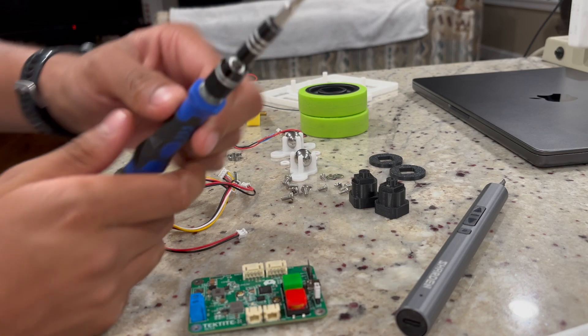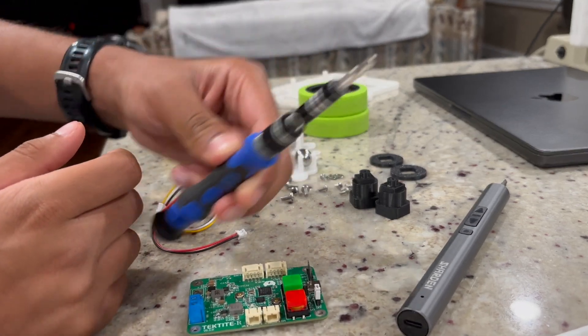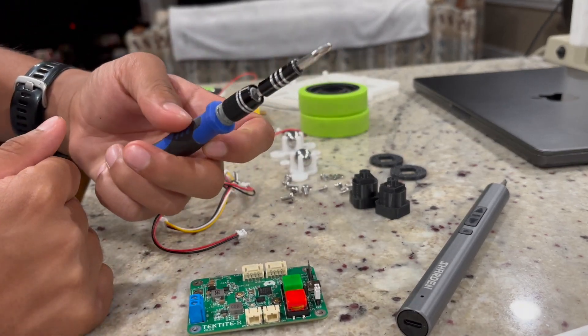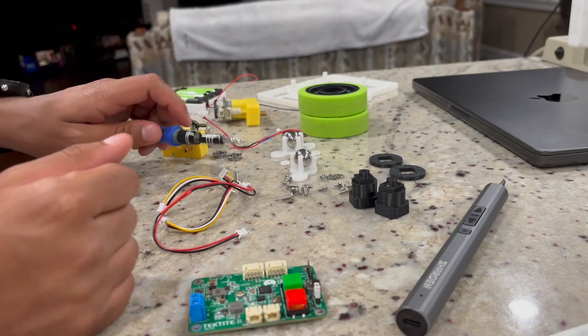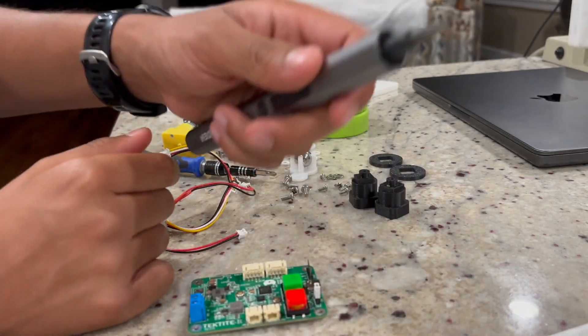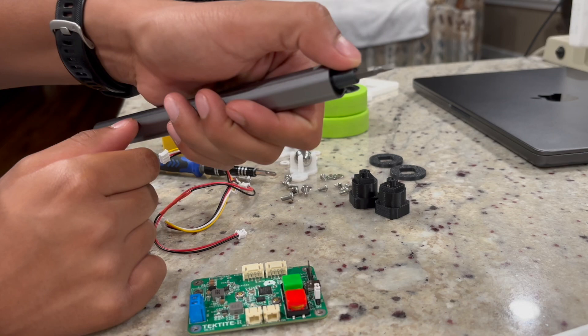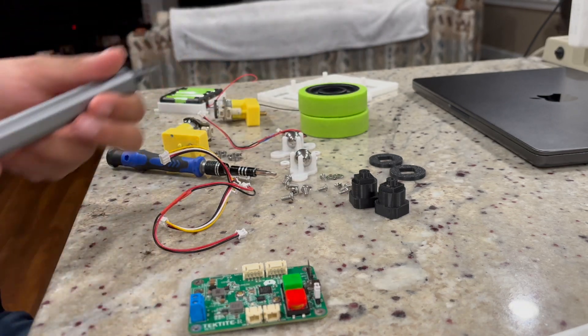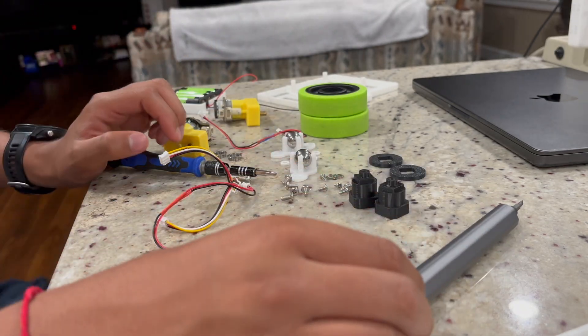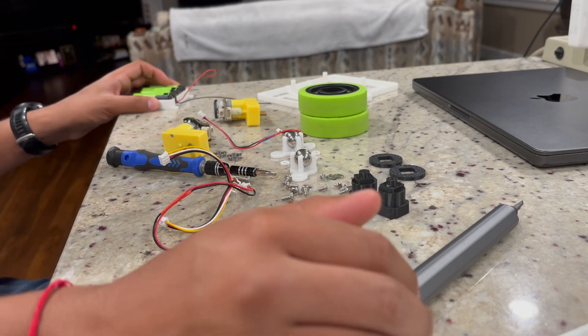Next up, you need a screwdriver with a phillips head bit. I'm using the 2.0 bit. And you also need a screwdriver with a flat head bit, and that's just for the terminal block. Let's get started with the build.